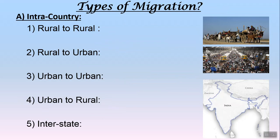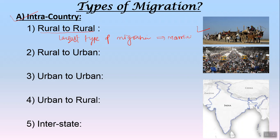Let us now move on to types of migration. There are two major types: intra-country, that is within a country, and inter-country, between countries. For intra-country, the first type is rural to rural migration — moving from one village to another. In India, this is the largest type of migration, and the most important reason is marriage. Since rural population consists of around 66%, after marriage the girl moves to the husband's village, making this the most prevalent form.